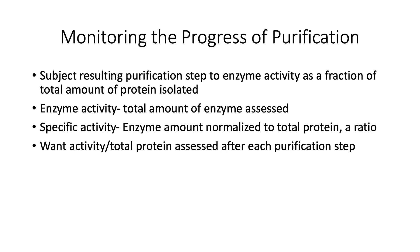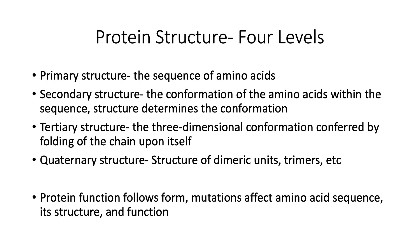To monitor purification progress for enzymes, you can track enzyme activity as a fraction of total protein. Protein concentration can be measured using the Biuret or Bradford (Lowry) methods. The ratio of enzyme activity to total protein concentration is the specific activity, and as purification steps proceed this ratio increases. This is expressed as fold purification — for example, 10-fold, 100-fold, or 500-fold. Tracking activity and total protein after each purification step is a standard practice. That would be good for today, thank you very much.